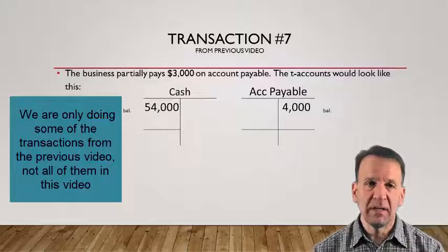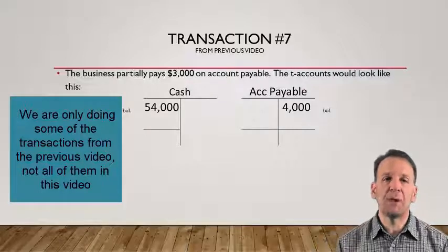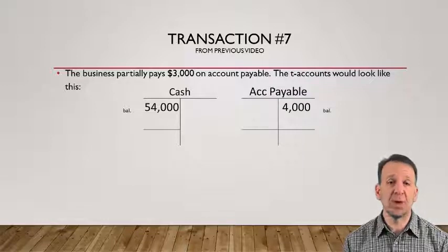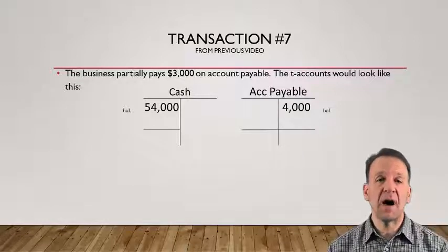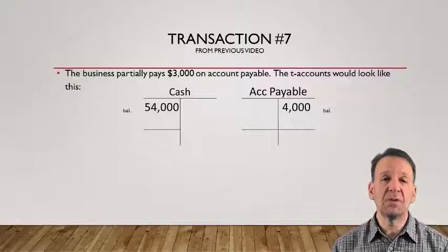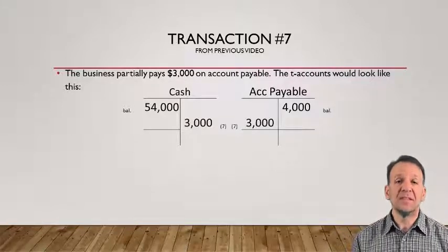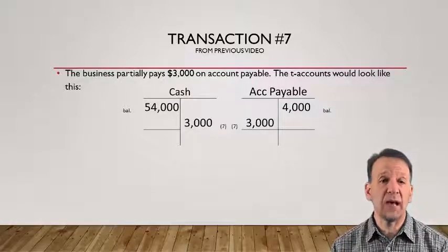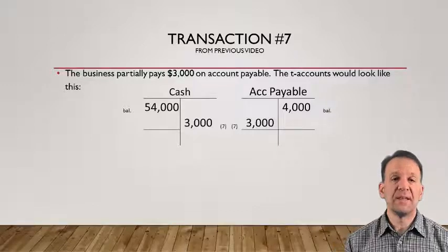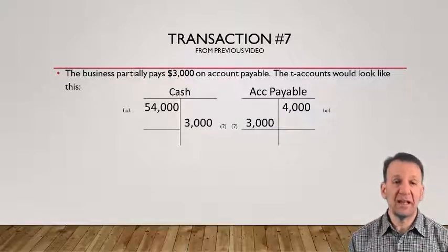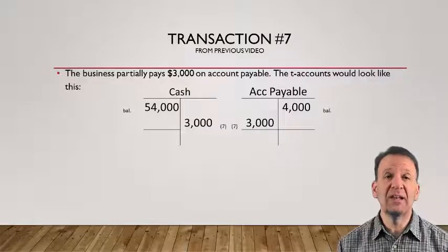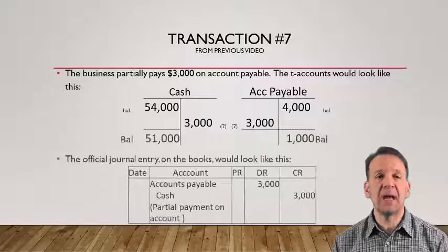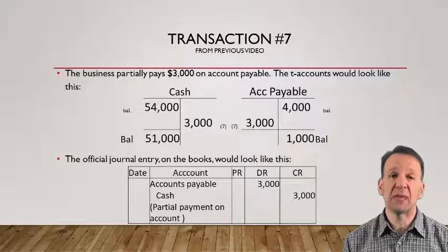Transaction number seven is a partial $3,000 payment on the accounts payable. Accounts payable previously had a $4,000 credit balance. Now we're paying off $3,000, so we have to reduce accounts payable $3,000. This is done by debiting accounts payable, and then we credit cash $3,000. The debit to a liability decreases it, and the credit to an asset decreases the asset. The official journal entry would be to debit accounts payable $3,000 and credit cash $3,000.